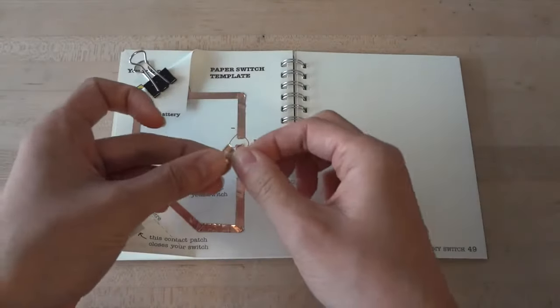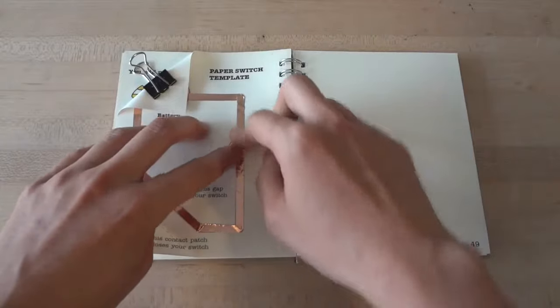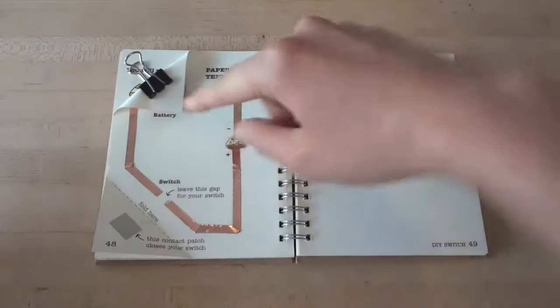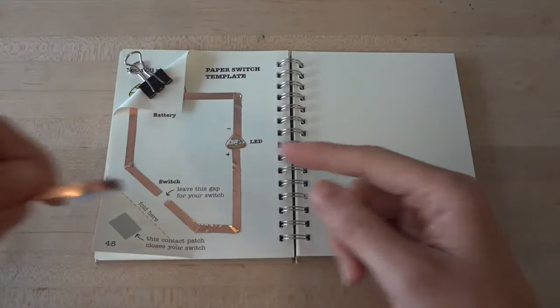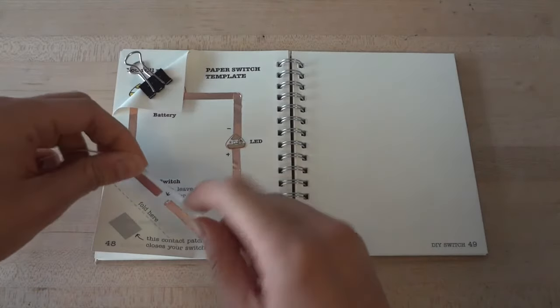Now you're ready to add your LED. Stick the LED sticker in the gap on your template following its footprint. Notice that the LED doesn't turn on immediately, and that's because there's another gap in your circuit.